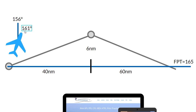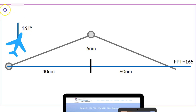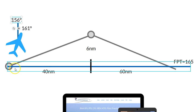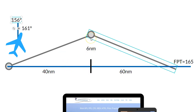In this case, we're going to say that we wanted a flight plan track of 165. Remember, the heading is not the track — the track is the path that the aircraft flies, while the heading is where the aircraft is pointing. So we were pointing 161. The question tells us: you've flown 40 nautical miles, you were heading 161, and at the 40 nautical mile point you were six nautical miles to the left of track.